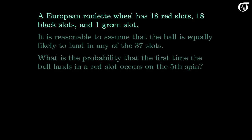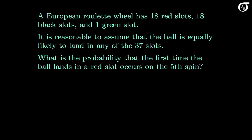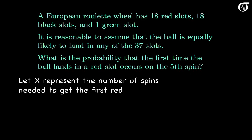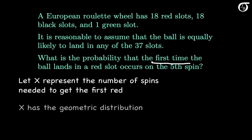A European roulette wheel has 18 red slots, 18 black slots, and 1 green slot, and the ball is equally likely to land in any of the 37 slots. Suppose we want to know the probability that the first time the ball lands in a red slot occurs on the fifth spin of the wheel. Let x represent the number of spins needed for the ball to land in a red slot for the first time — x has the geometric distribution, which models the number of trials needed to get the first success in independent Bernoulli trials.